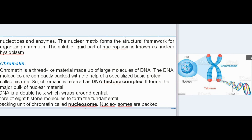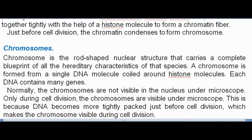Chromatin is a thread-like material made up of large molecules of DNA. DNA molecules are compactly packed with the help of a specialized basic protein called histone, so chromatin is referred to as a DNA-histone complex. DNA is a double helix which wraps around a central core of 8 histone molecules to form the fundamental packing unit of chromatin called the nucleosome. Nucleosomes are packed together tightly with the help of a histone molecule to form a chromatin fiber. Just before cell division, the chromatin condenses to form chromosomes.